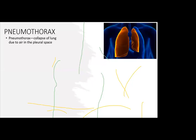Pneumothorax refers to a collapse of the lung due to air in the pleural space. As you can see in the image, one lung has totally collapsed. It can be caused by surgery, disease, or trauma. It could be a spontaneous pneumothorax where the cause is unknown, or a tension pneumothorax, where air is trapped in the pleural space under positive pressure.